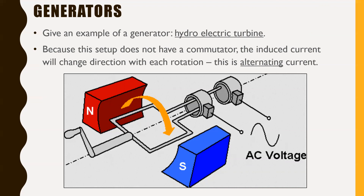Because this generator setup does not have a commutator — a split ring — the induced current will change direction with each rotation, producing alternating current. The commutator in a motor kept it always spinning in the same direction; here, mechanical energy is always turning, so a split ring doesn't do as much. These generators produce AC voltage — the current goes back and forth. That's actually a good thing: pretty much anything you have plugged into the wall uses AC voltage, while DC voltage is mostly used in things that have batteries.